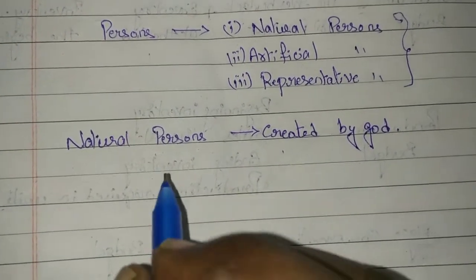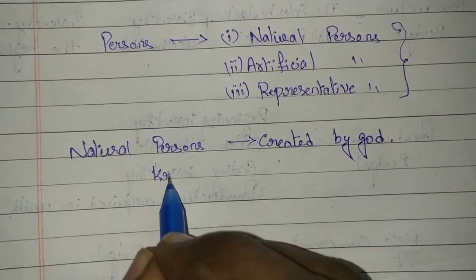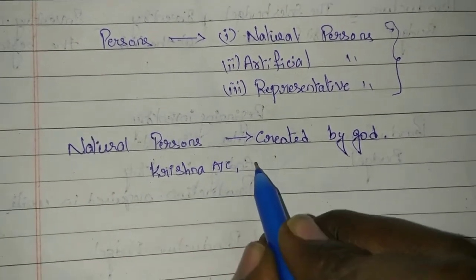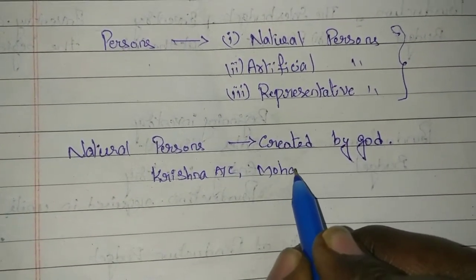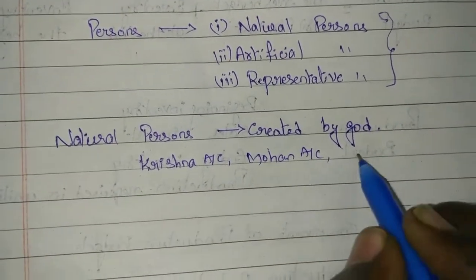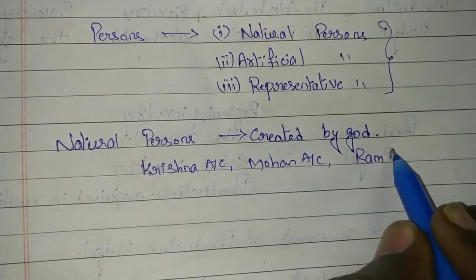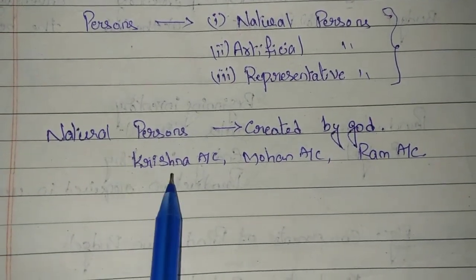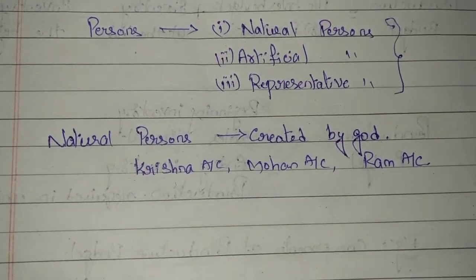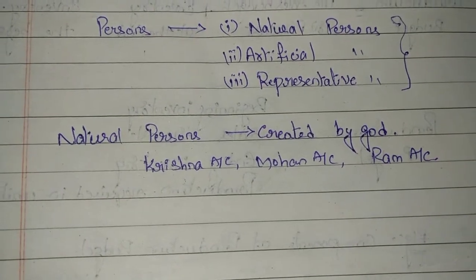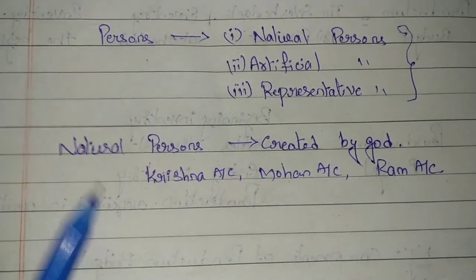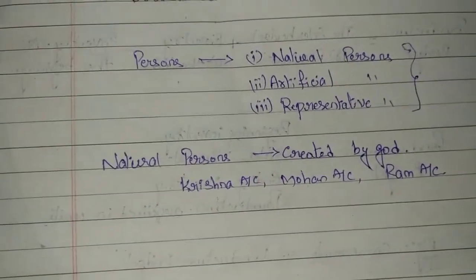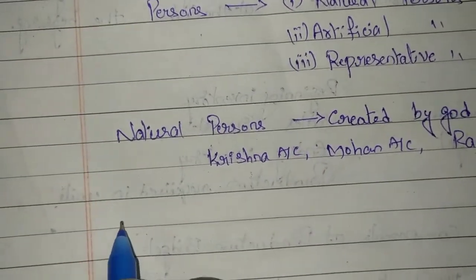Examples of natural persons: we can give Krishna account, Mohan account, and Ram account. Whenever we are having transactions with the names of persons like these examples, those transactions will come under personal accounts where the persons are treated as natural persons.